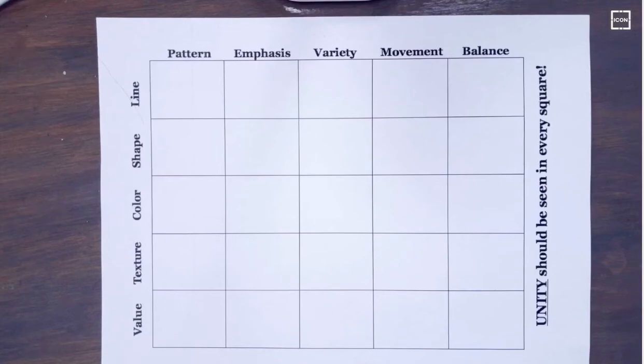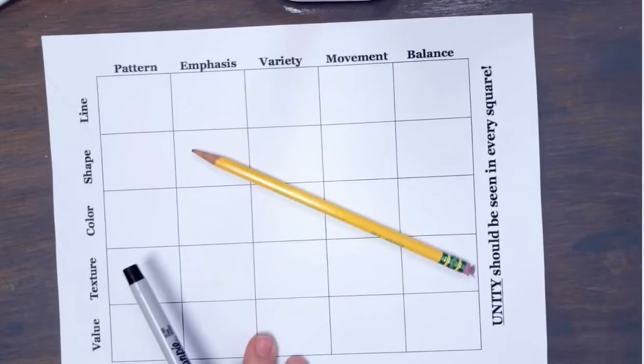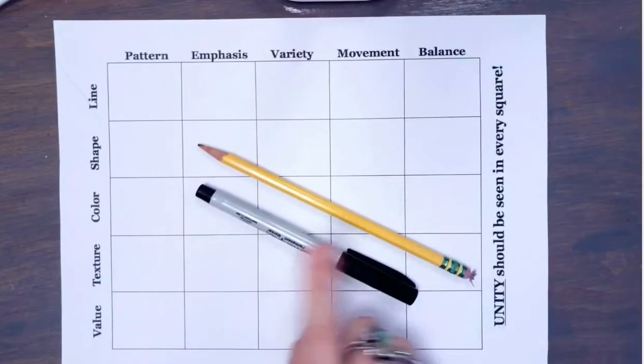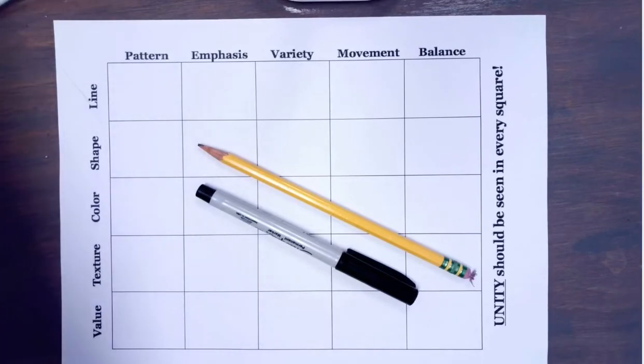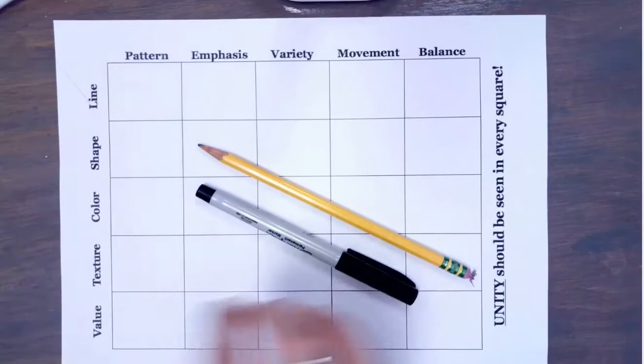Today we are going to be working on our principles of design and elements of art matrix. What you will need is a pencil and a sharpie marker and any coloring supplies you have. You can use colored sharpies, colored markers, crayons, colored pencils, etc.